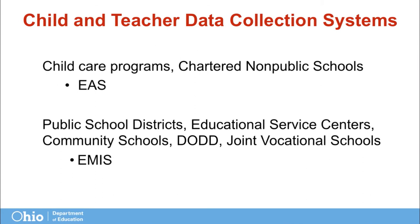Depending on the type of program you are, you will use one of two different data reporting systems. The determination is based on the grantee type, even if you subcontract with an entity that would fall into a different category. For example, an ESC subcontracts with both a local public district and a Head Start licensed by ODJFS to provide services. All of the children would be reported in EMIS because that is the system the grantee uses to report — it follows the grantee, not necessarily the location in which the child receives services. If you determine that you are an EMIS reporting program, this information will not apply to you.